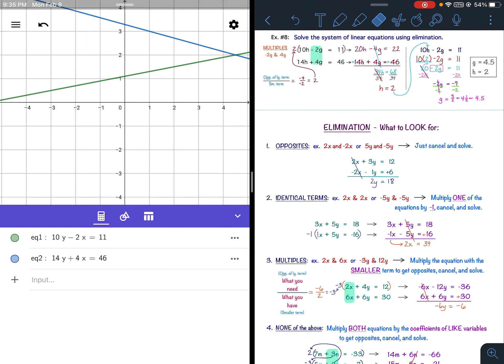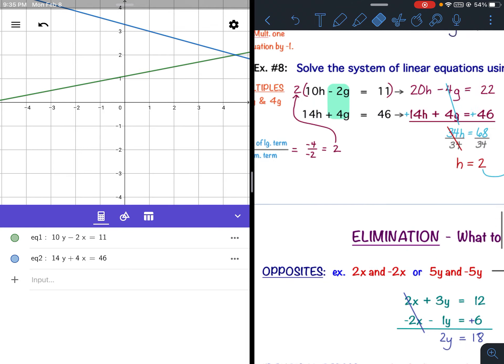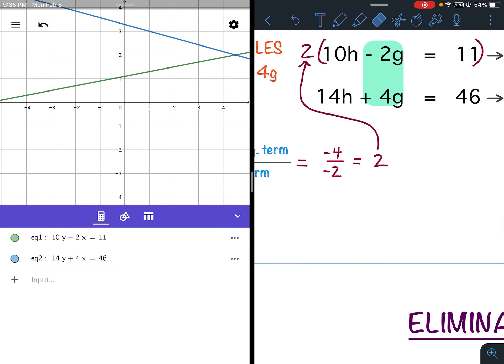Now, again, I don't have x and y. g comes before h. Since g comes before h, g was the x, h was the y. So when I put these equations into the calculator, I did 10y minus 2x equals 11, and then 14y plus 4x equals 46.